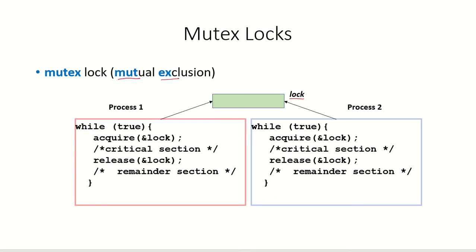We have a lock variable which can take two values, 0 or 1. Any process which wishes to enter the critical section will try to acquire the lock. If the lock is available, meaning the value of lock is 0, the process can acquire it — changing its value to 1 and entering the critical section. If the value of lock is 1, the lock is not available and the process will keep waiting for the lock value to become 0. After a process has acquired the lock and manipulated the critical section, it releases the lock by making its value back to 0.